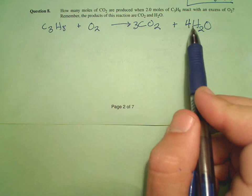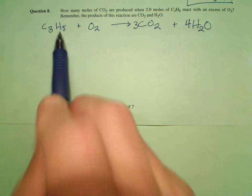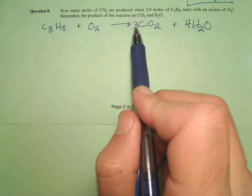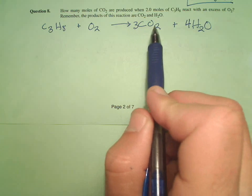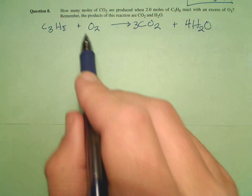So 3 and 3, 8 and 8, how about oxygens? 3 times 2 is 6, plus 4 is 10, and I have 2 over here, so I'm going to need a 5.